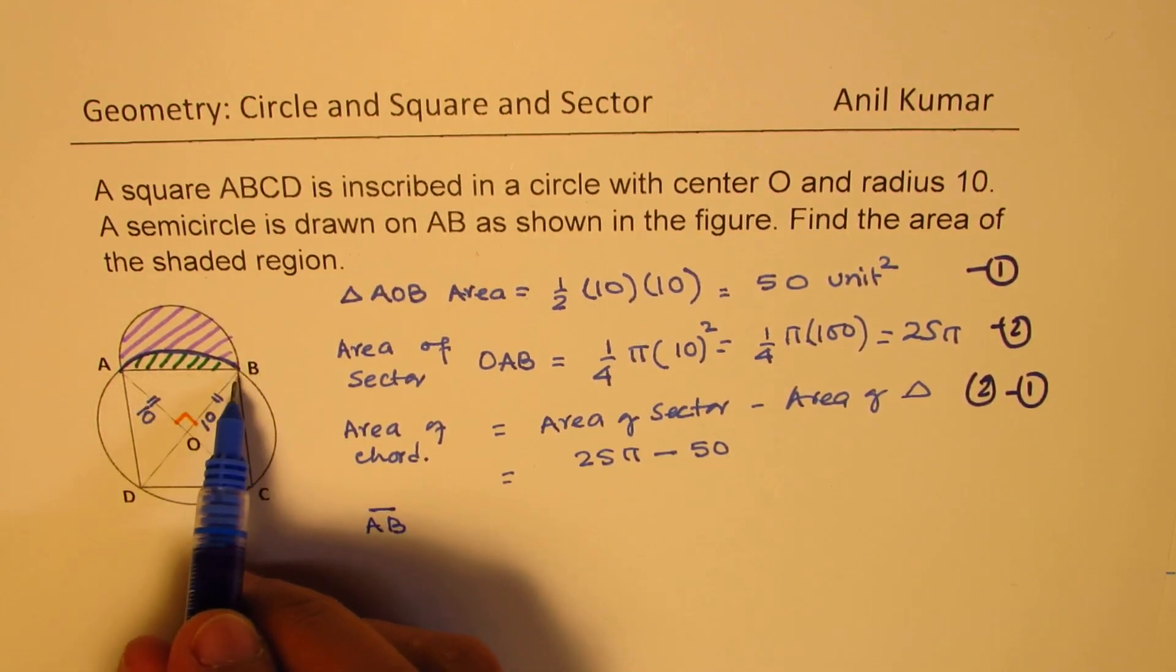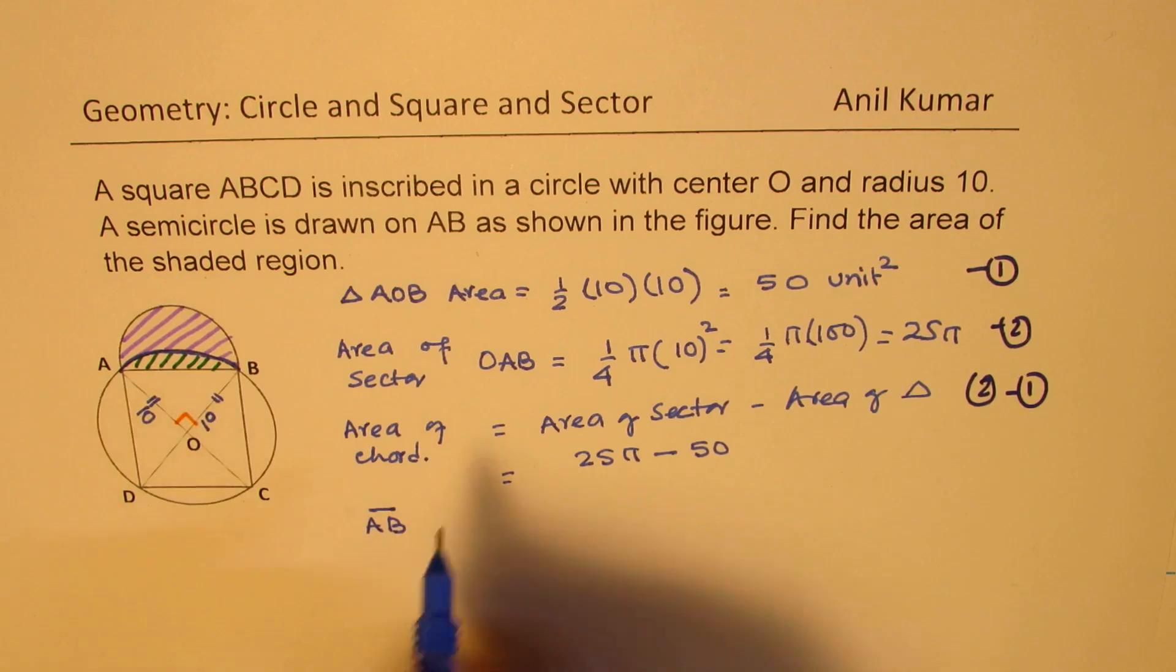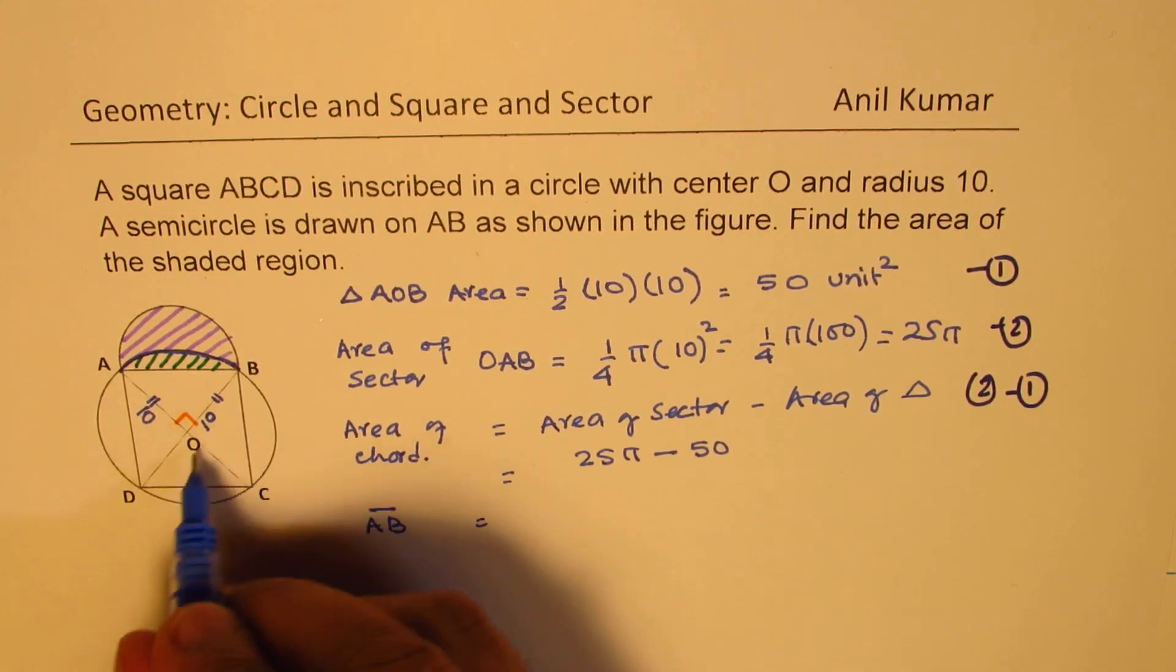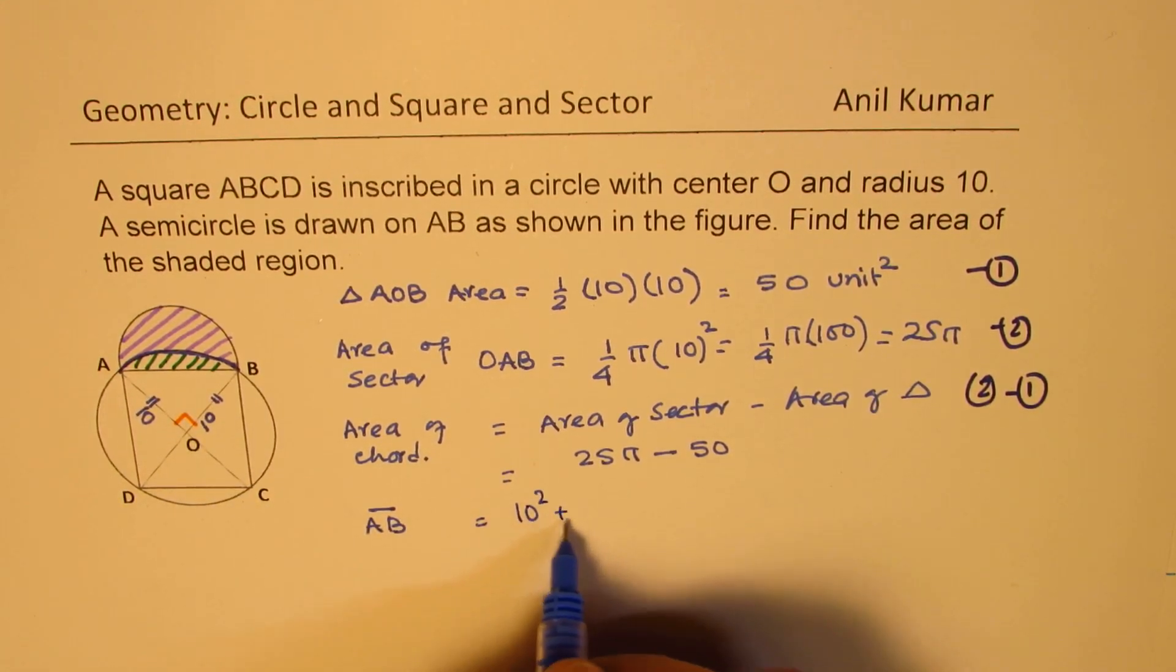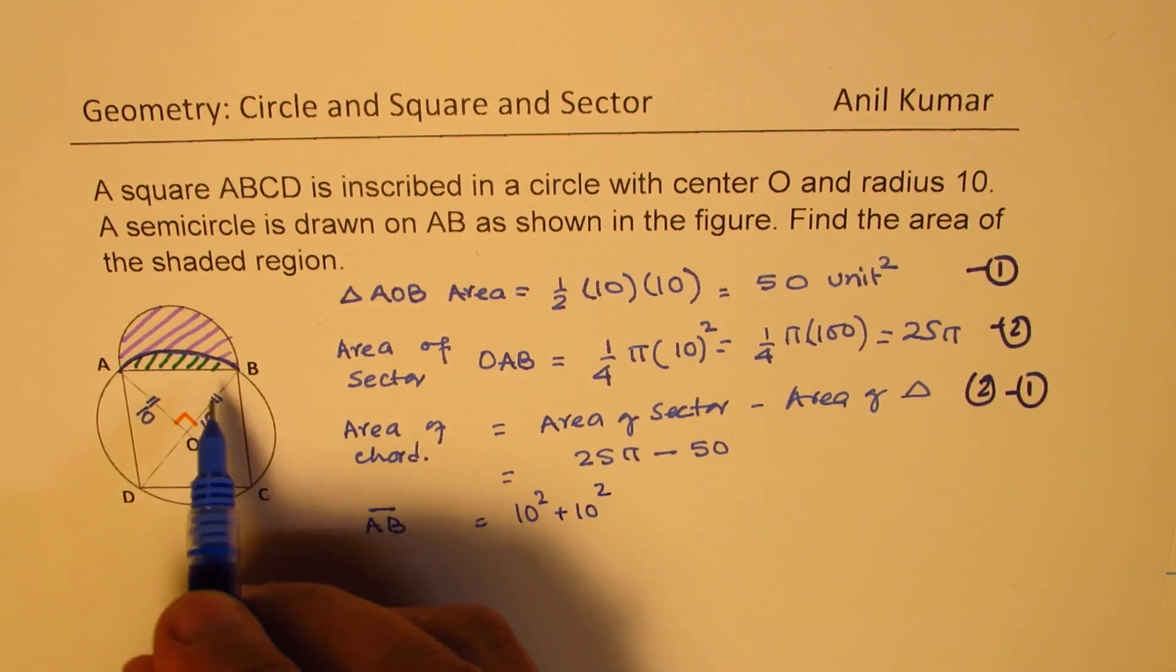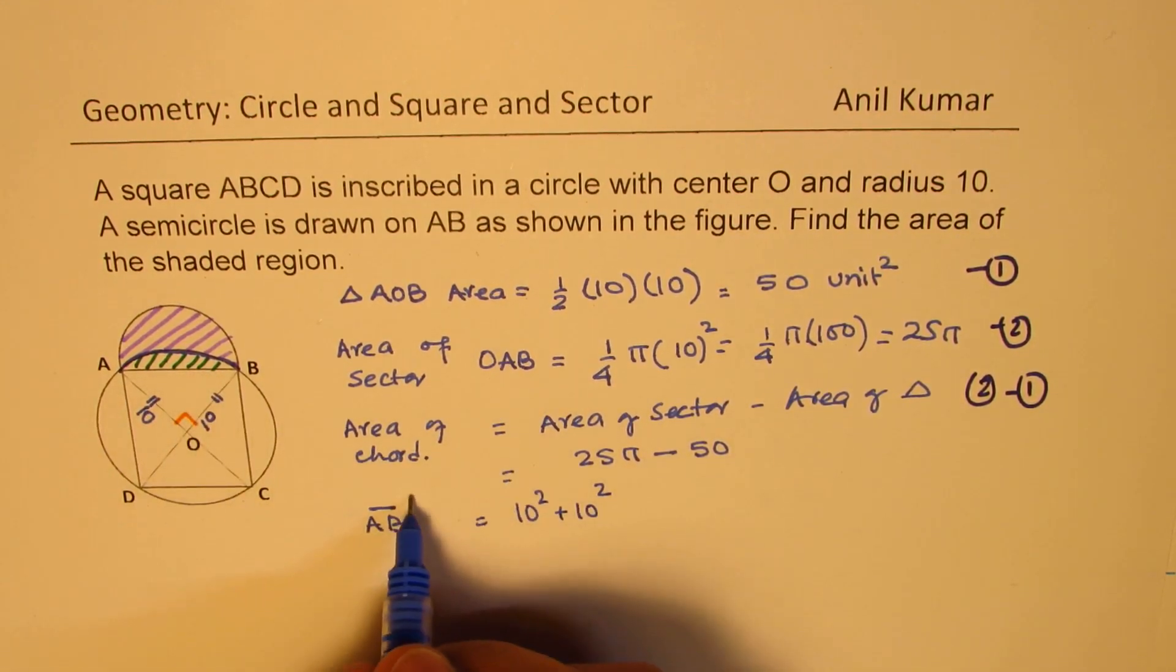So this length AB is side of a square. Now, from Pythagorean theorem, we know that should be 10² + 10², AB² is 10² + 10².